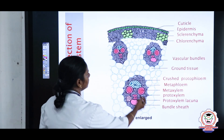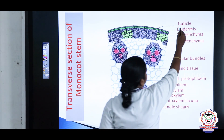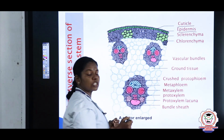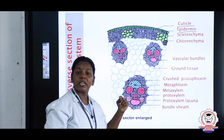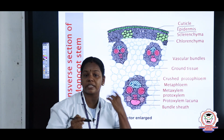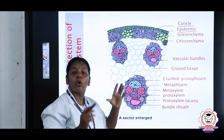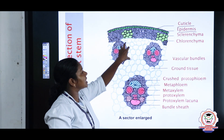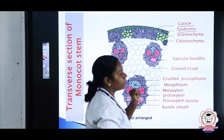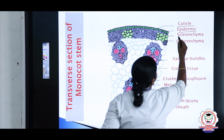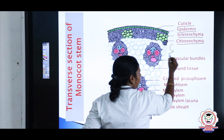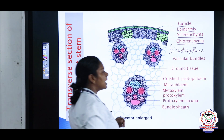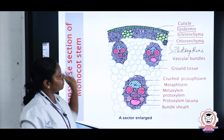The cuticle is the outermost layer and it is for protection. Next is the epidermis. In the monocot stem, the cortex is made up of sclerenchyma cells — this is an important difference. In the dicot stem, the cortex has collenchyma and chlorenchyma cells, but in the monocot stem the cortex is made of sclerenchyma cells with chlorenchyma in the middle. The function of sclerenchyma is mechanical support, and the function of chlorenchyma is photosynthesis since chloroplast is present.